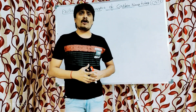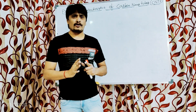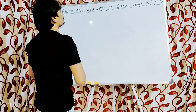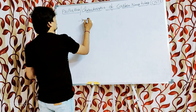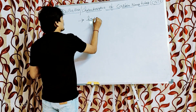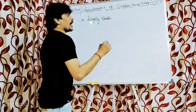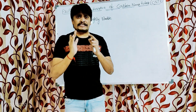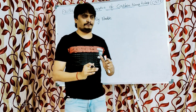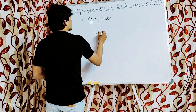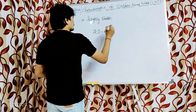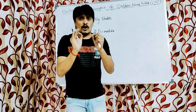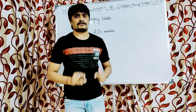Hi students, as a part of carbon nanotubes, today I am going to explain the properties or characteristics of carbon nanotubes. The first property is it is highly stable. This particular carbon nanotube is highly stable because it is a two-dimensional matrix with a network structure comprised of so many carbon-carbon bonds.